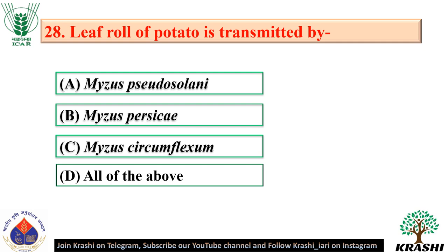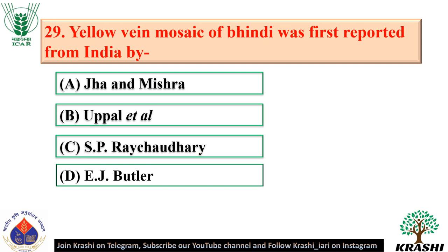Question number 28: Leaf roll of potato is transmitted by Myzus pseudosolanii, Myzus persicae, and Myzus circumflexum — these are species of aphids — so the correct answer is option D, all of the above. Question number 29: Yellow vein mosaic of Bhindi was first reported from India by Uppal et al. in 1940.